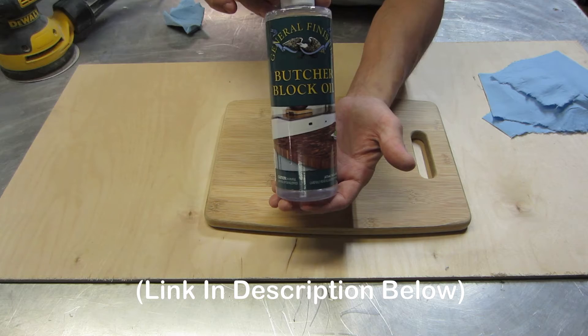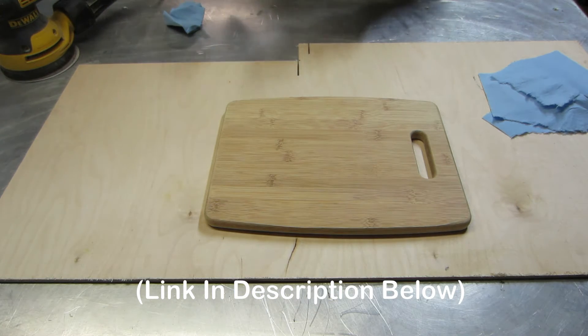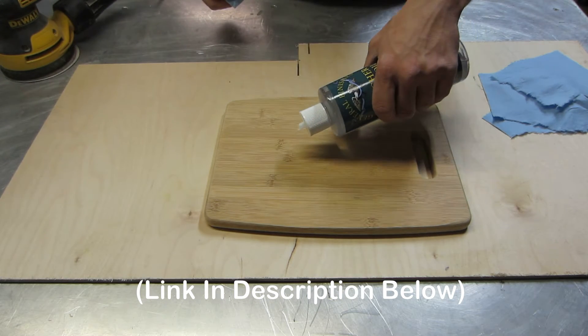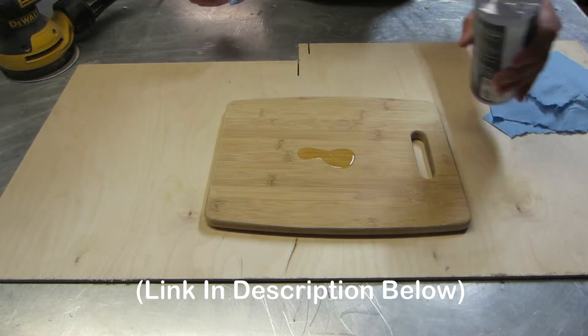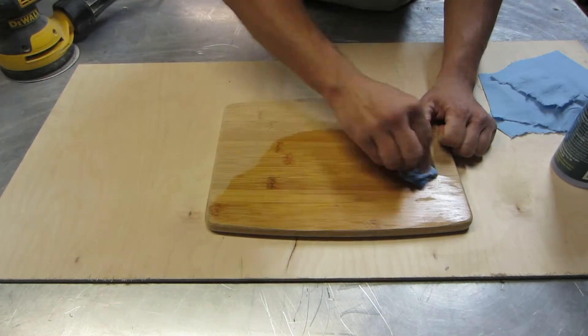I decided to use General Finishes Butcher Block Oil, which turned out really great. You just have to apply it pretty liberally, rub it in, and then after about 30 minutes you wipe off the excess and you could reapply a second or third coat.